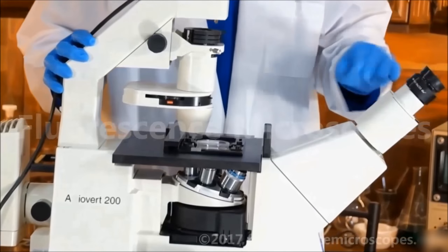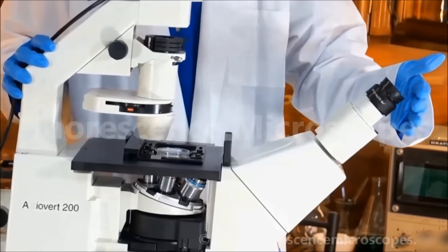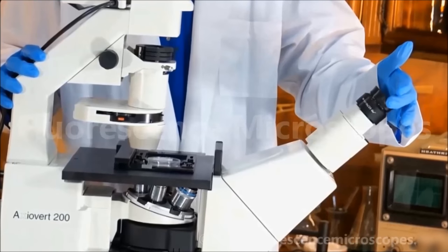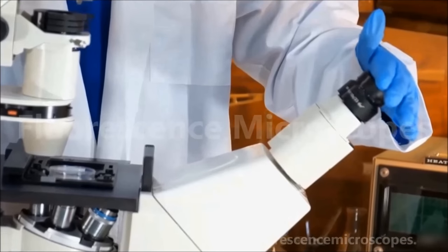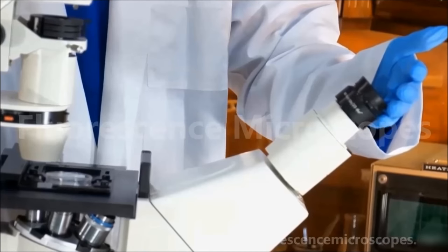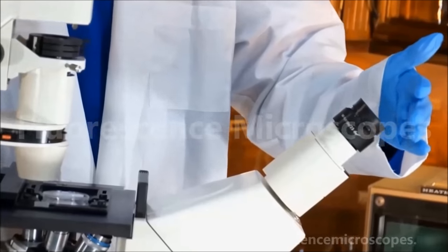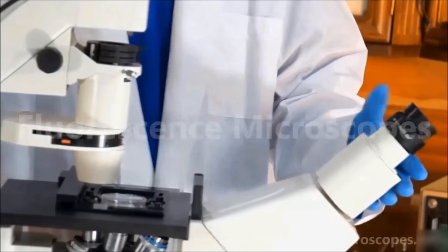We've got a binocular head and we've got the rubber eye cup eye guards. Those are useful for blocking the extraneous light in the room so that you can visualize the low lux fluorescence signal.